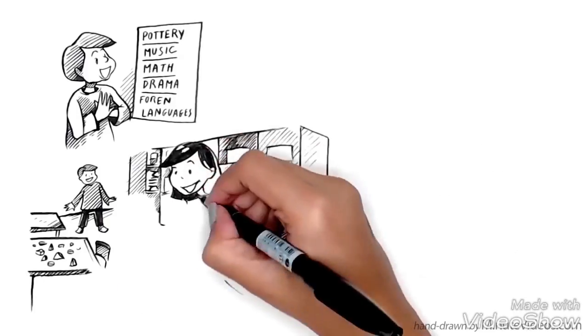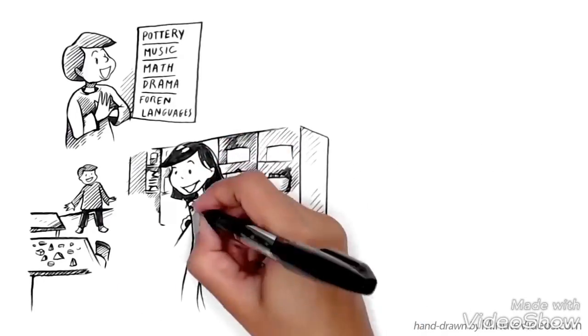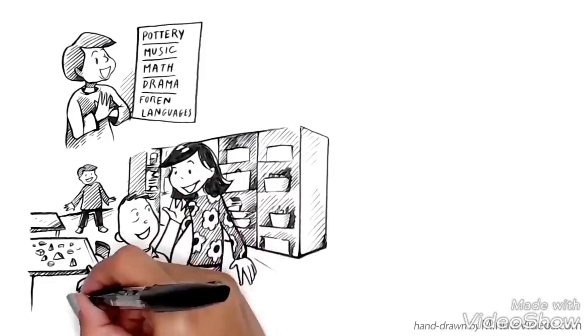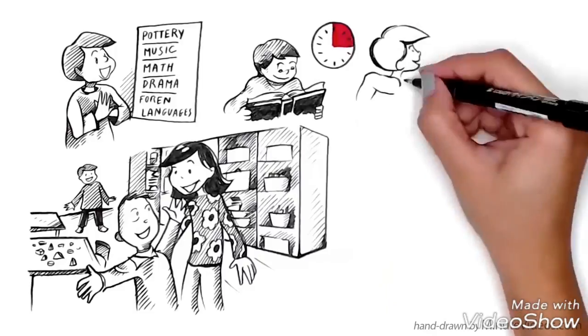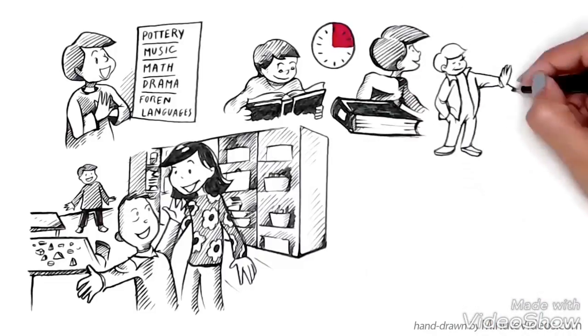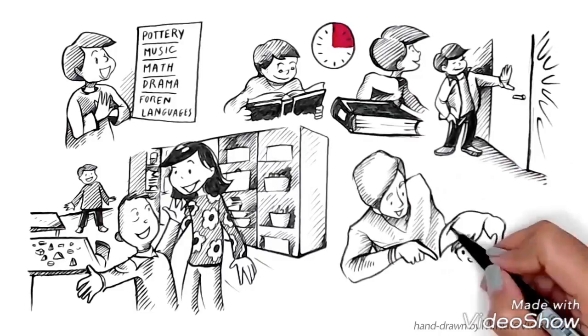Mixed age classes, from 0 to 3, 3 to 6, or 6 to 12, so children can learn from each other. Uninterrupted blocks of study time, usually three hours. No grading or homework, and a trained teacher.